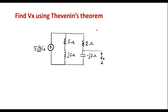In this video, I will consider one problem on Thevenin's theorem. Find Vx using Thevenin's theorem. This is the given circuit. Here Vx is shown — that is, Vx is the voltage across the -J2 ohm impedance. We are supposed to calculate this Vx using Thevenin's theorem.